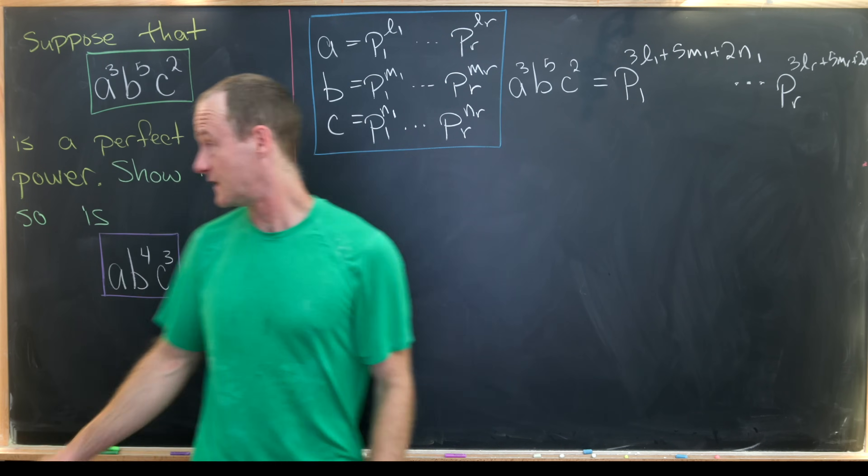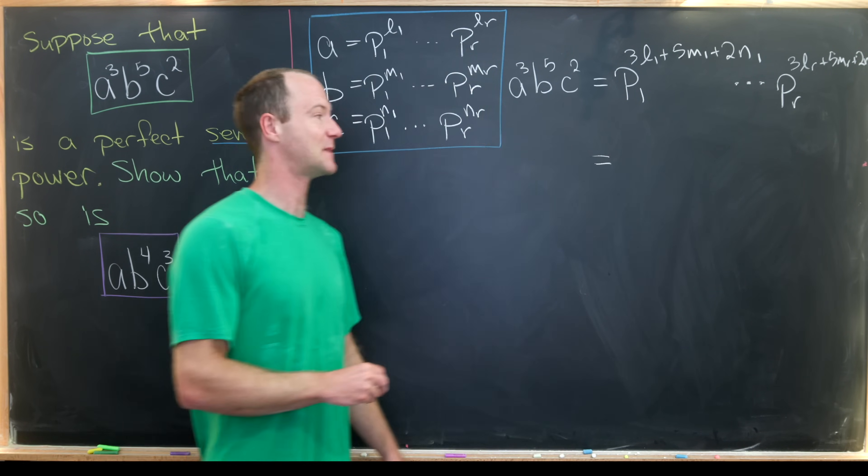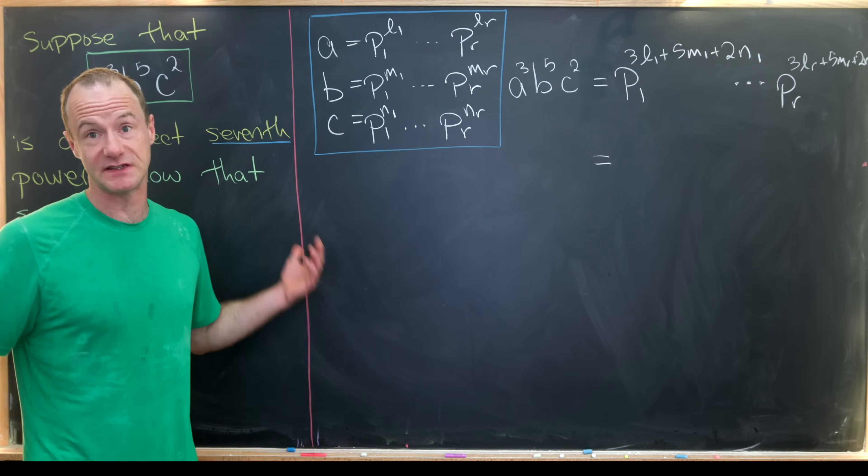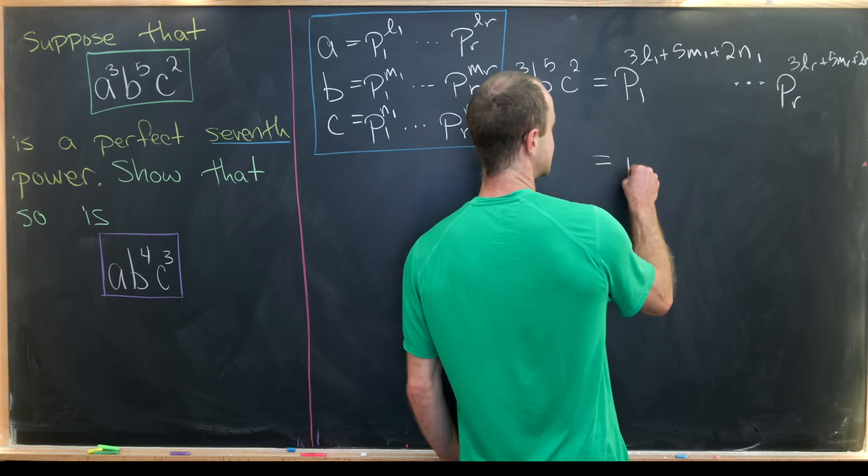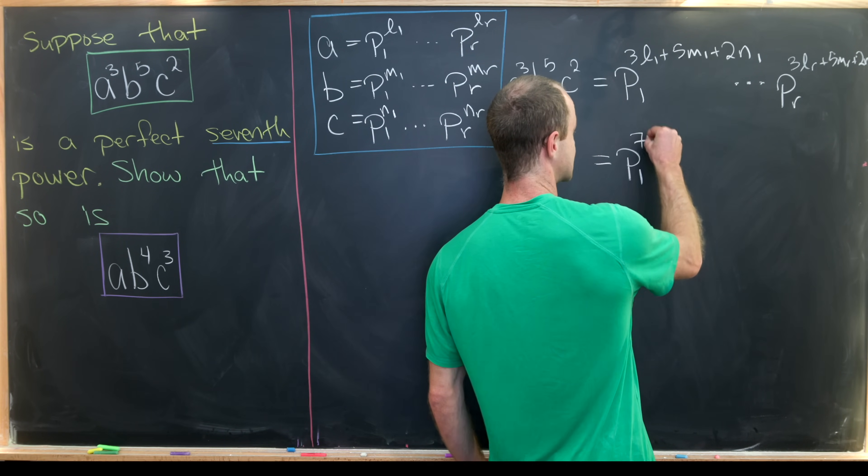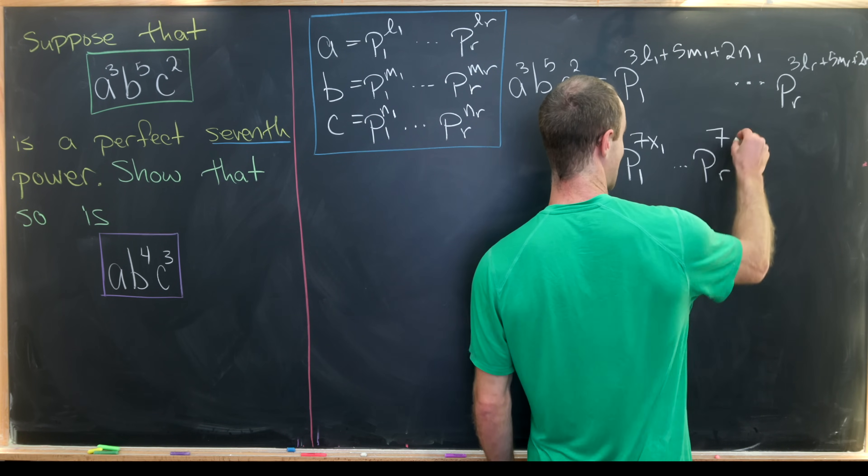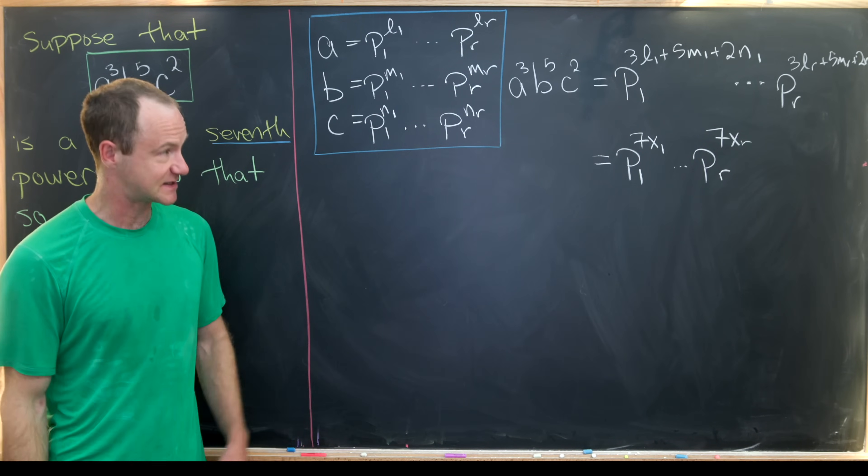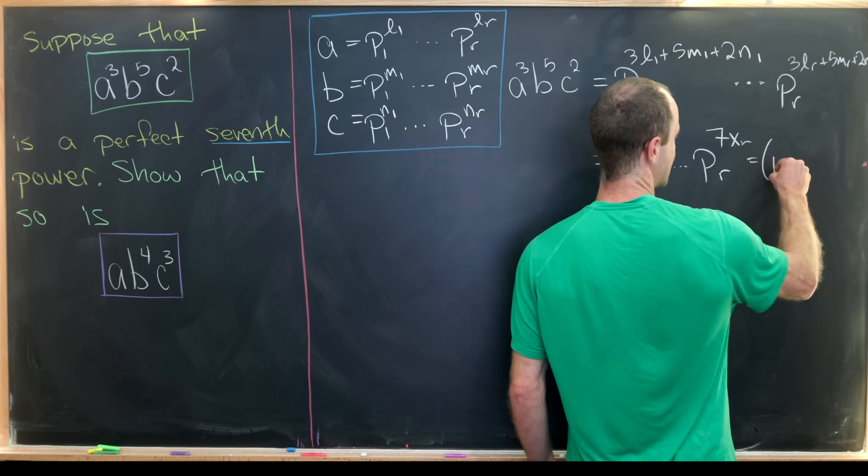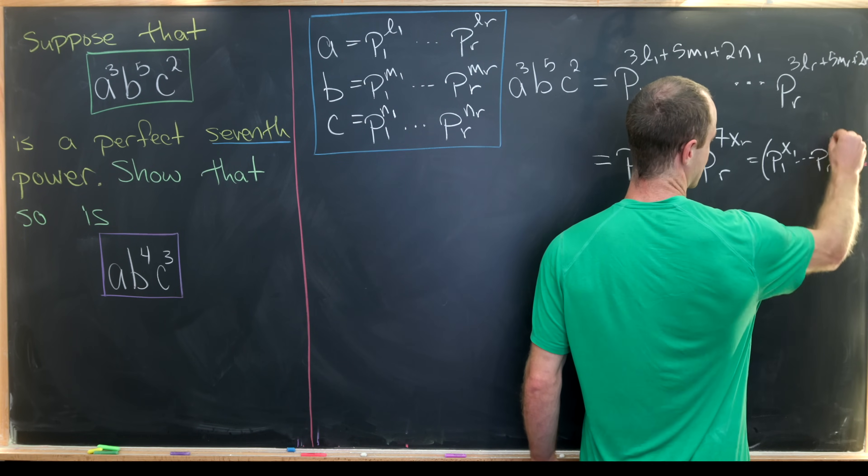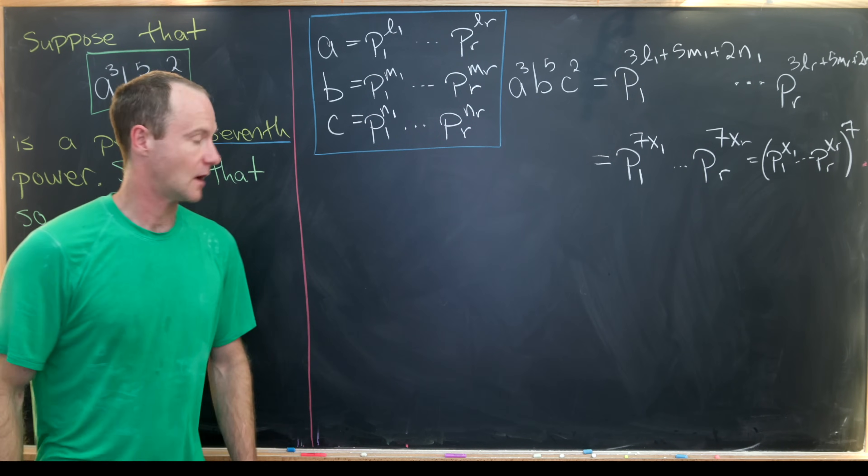And we have given that this is a perfect seventh power. Well, whatever perfect seventh power it is, it must have the same prime factor. So we're using that fact quite a bit. And so this is going to be p1 to the 7 times x1 all the way up to pr to the 7 times xr. So it's got to be a seventh power. So what seventh power is it? Well, I think it's pretty clear that it's p1 to the x1 all the way up to pr to the xr to the 7. Okay, great.